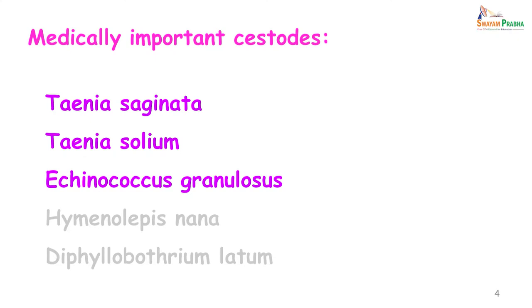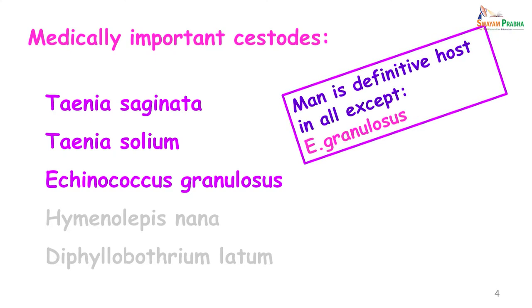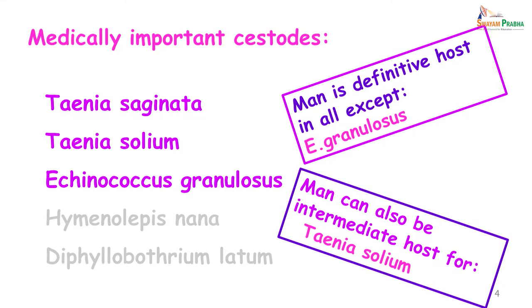There are 5 medically important Cestodes. In today's lecture we will be covering Taenia saginata, Taenia solium and Echinococcus granulosus. We have to remember that man is the definitive host for all of these except Echinococcus granulosus, and man can also be an intermediate host for Taenia solium.